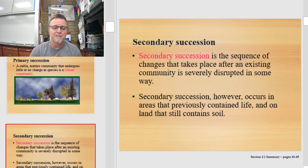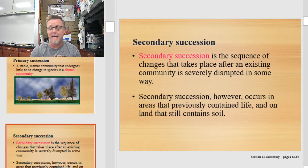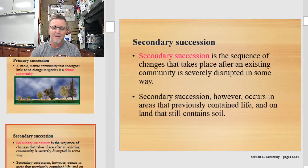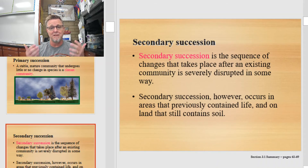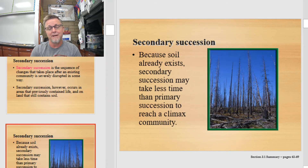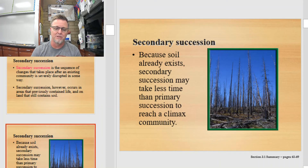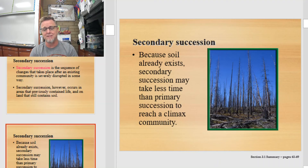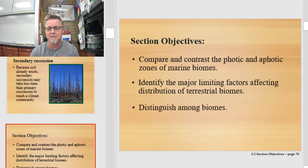Secondary succession is the sequence of change that takes place after a community is severely disrupted in some way — there was once life here, but something bad happened, and now life has to come marching back. The best examples occur with forest fires, floods, landslides, or even humans plowing fields and walking away and letting nature slowly move back in. Because soil already exists in secondary succession, the stepwise movement of life into these areas is much faster than primary succession. The big difference: in primary succession you have to grow your soil first; in secondary succession, it's already there. So maybe within a few months or a year you're going to see life returning to the area.